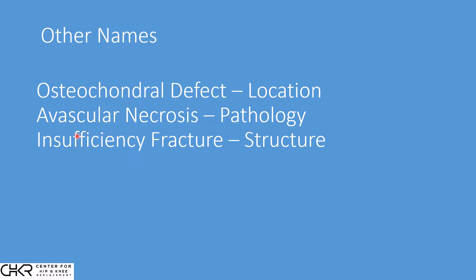The third name is an insufficiency fracture, which is a change to the structure of the bone. The bone itself is solid at the surface, but because of necrosis, the bone becomes weak and brittle and eventually breaks, creating an insufficiency or pathologic fracture. So the problem in the knee can be referred to as any of these three names, but they all refer to the same thing.